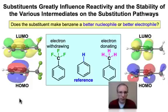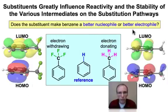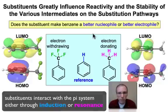The substituents on a benzene ring can influence the electronics of the π system to make it a better nucleophile or a better electrophile, and stabilize the various intermediates encountered in the reaction pathway shown in the previous webcast. There are two ways that these substituents can interact with the π system: one is by inductive effects, and the other is through resonance interactions that involve the π system entirely.